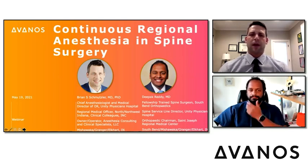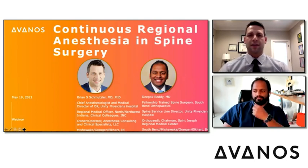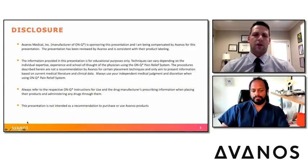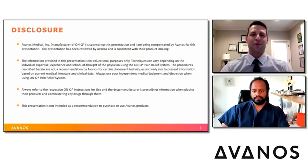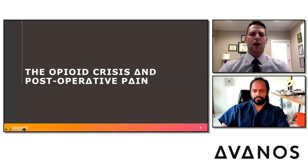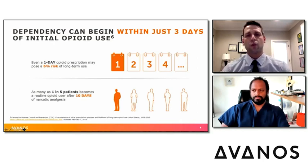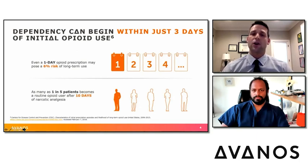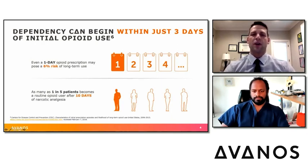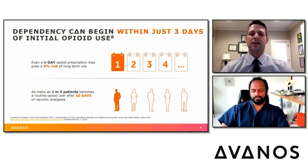Dr. Schmutzler begins the presentation with disclosures — both speakers are representing Avanos Medical, discussing the OnCue product and continuous regional anesthesia. When discussing regional anesthesia, he starts with the opioid crisis. Based on what's happened around the country and the world, we have an opioid epidemic with patients taking significant amounts of opioids and becoming addicted. A one-day opioid prescription poses a 6% risk of long-term use and abuse, and as many as 20% of patients become routine opioid users after a 10-day prescription.